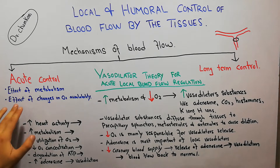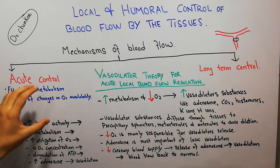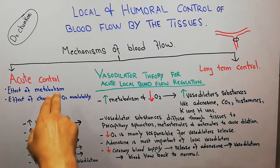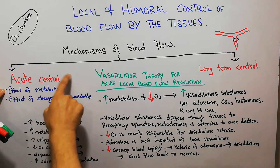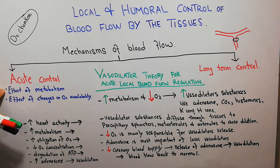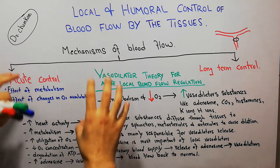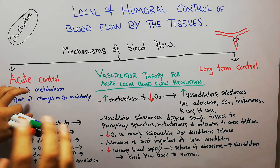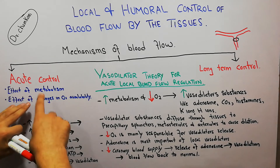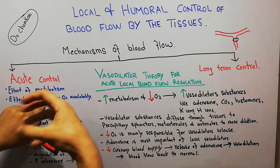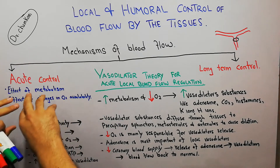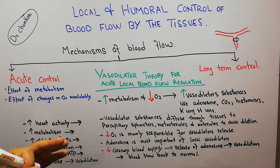We discussed the effect of metabolism and changes in oxygen availability as the main mechanisms responsible for acute changes in blood flow. The acute control of blood flow to any tissue, like muscles, is basically due to changes in metabolism and changes in oxygen availability. Today we are going to discuss the vasodilator theory — the theory that explains how these changes in metabolism and oxygen availability are responsible for acute control of blood flow.